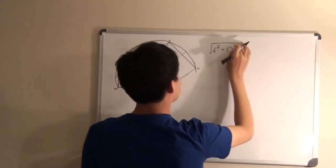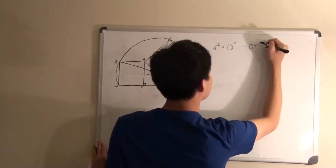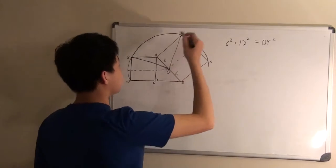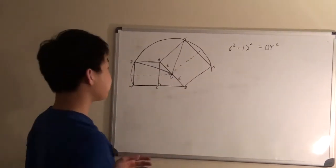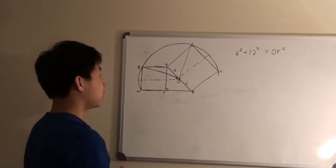So we know that OY would be 6 squared plus 12 squared, and then square rooted. Or actually, let's do this, OY squared. Right, since this side length is 12, since it's a square.